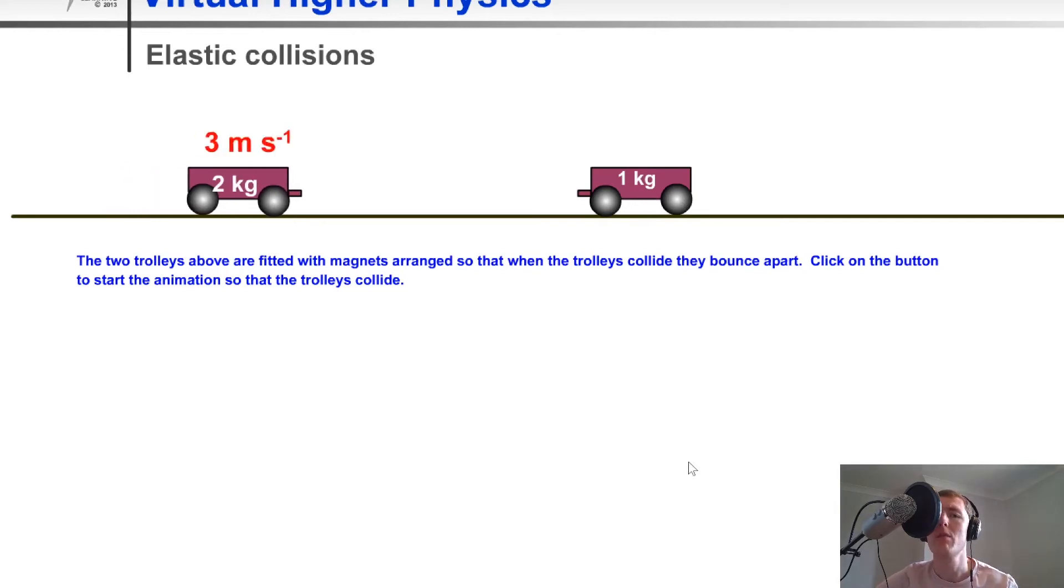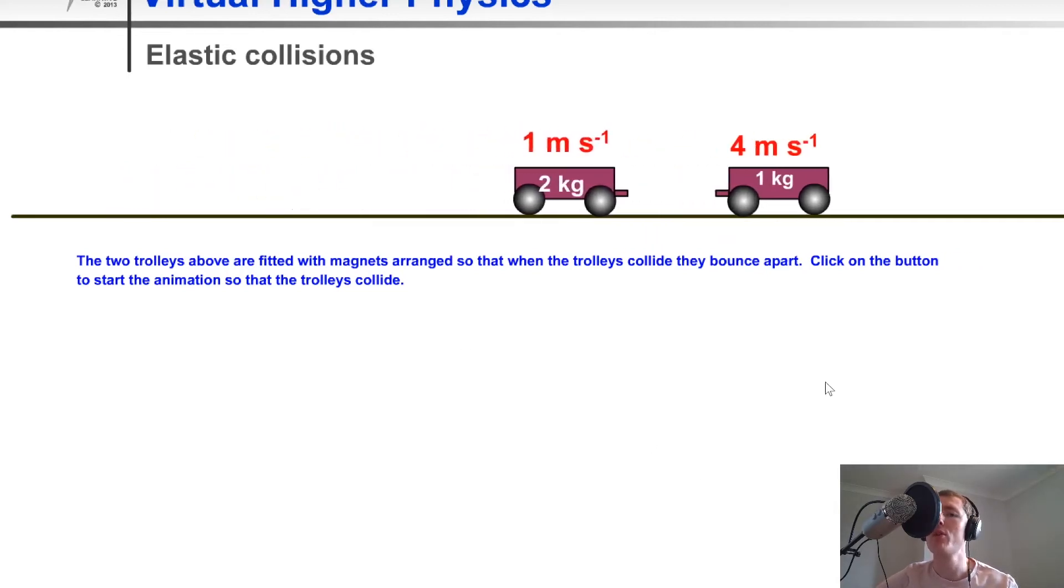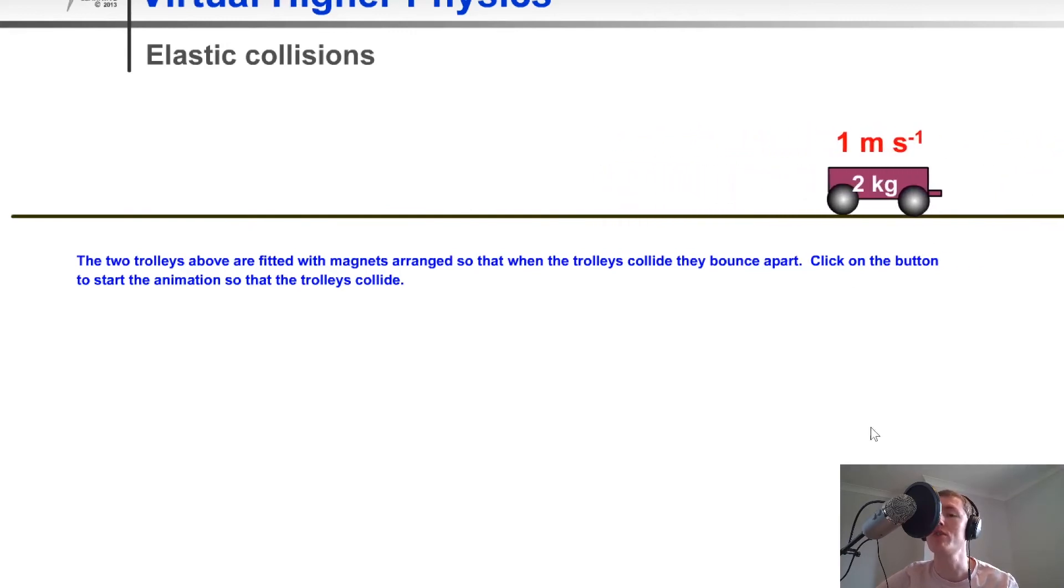And what we should see is that both objects move apart after impact. And you'll see that the two move off to the right. And if I just show you that again, you'll see the one of smaller mass moves off at a much higher velocity, whereas this one loses some velocity.